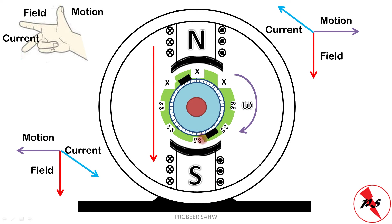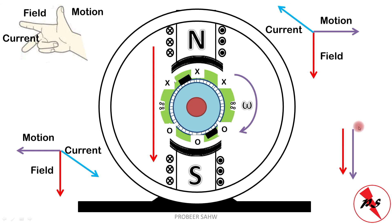Since the current is coming out of the screen from this armature conductor, it is marked with a dot symbol. Similarly, the other conductors near the south pole also carry current coming out of the screen. However, for the conductor where the magnetic field direction and the instantaneous direction of motion are both downwards or both upwards — i.e., not orthogonal — there will be no induced current.